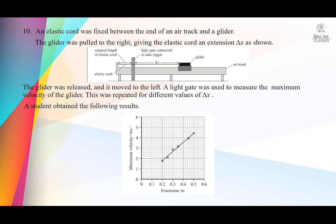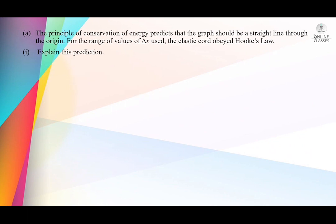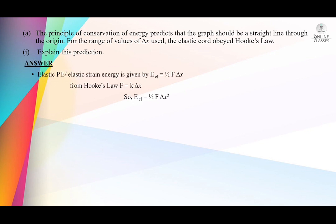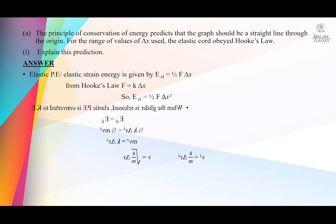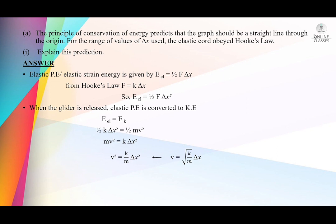The question asks: the principle of conservation of energy predicts that the graph should be a straight line through the origin for the range of values of Δx, given that the elastic cord obeys Hooke's law. Explain this prediction. Elastic potential energy = ½FΔx. From Hooke's law F = kΔx, substituting gives E_elastic = ½kΔx². When the glider is released, elastic potential energy converts to kinetic energy, so ½kΔx² = ½mv².